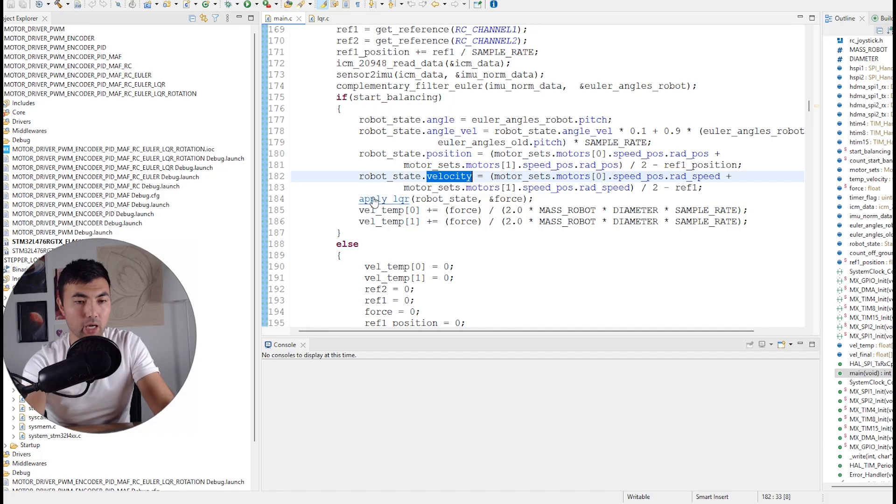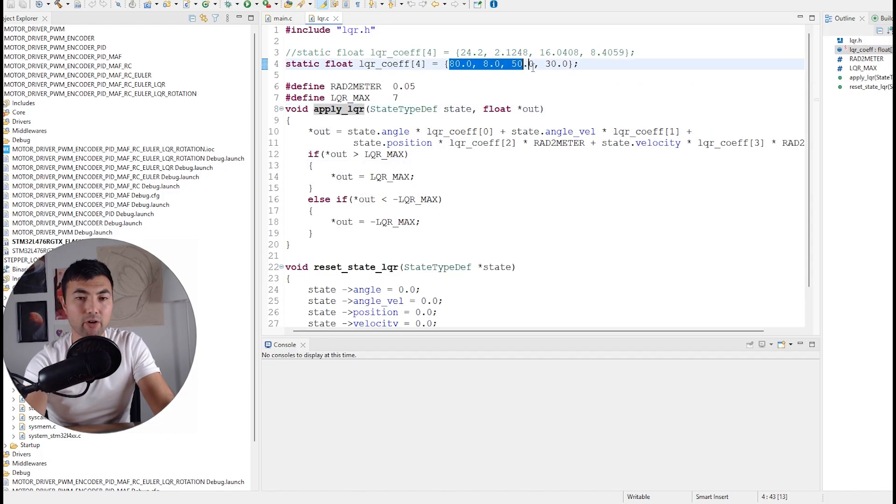Then I apply LQR. So here I have the functions, the gains I defined, and every variable is multiplied by the corresponding gain, and we take the sum.